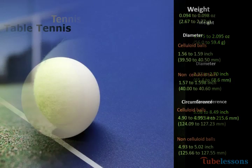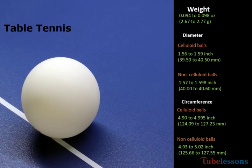Next one: table tennis. Weight of the table tennis ball should be between 0.095 and 0.098 ounce, or in terms of grams it should be between 2.67 and 2.77 grams.